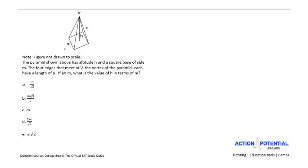If you're not careful, you could make an assumption about a figure that's not necessarily true. The second thing to notice is the answer choices. We have square roots of 2 and square roots of 3. Typically on the SAT, when you see answer choices that have to do with square roots of 3 and square roots of 2, and you see a figure where you could potentially draw triangles, a lot of times we're dealing with a special right triangle. And in fact, in this problem, that's exactly what we're dealing with.